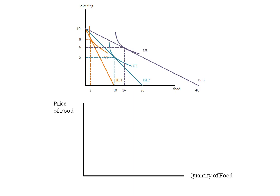What we'll do is put a horizontal axis as the quantity of food, but the vertical will be the price of food.